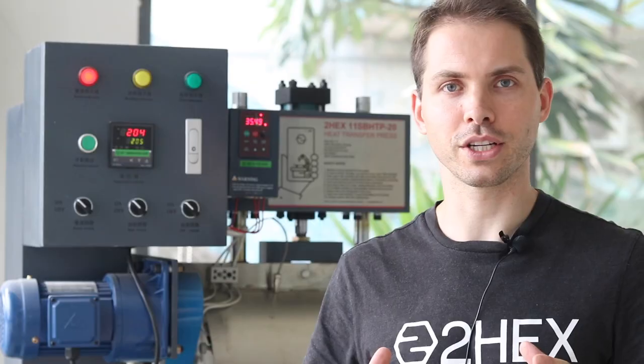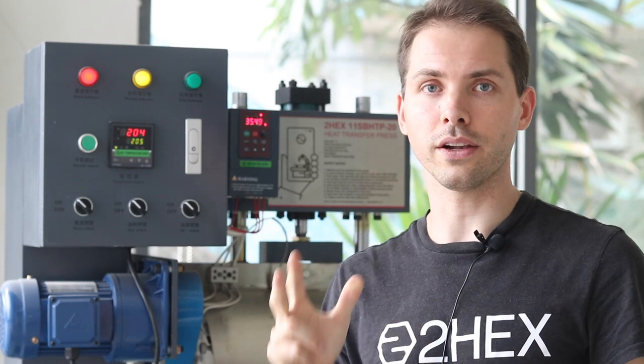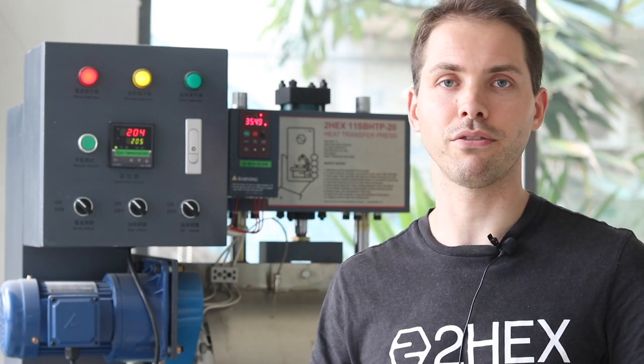The 2HECS heat transfer machine has three settings: the heat, the pressure, and the speed. All three need to fit together to have a perfect deck print.